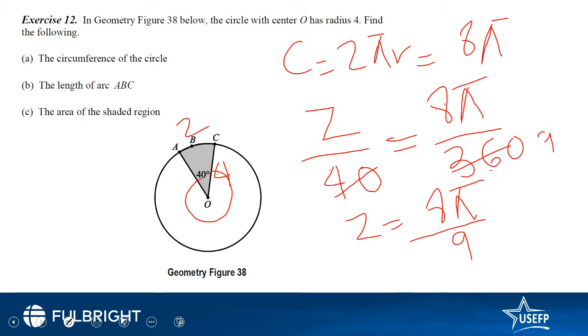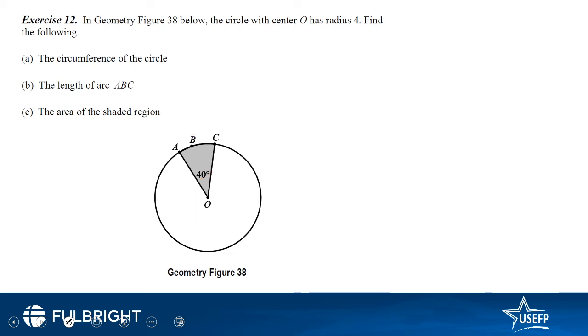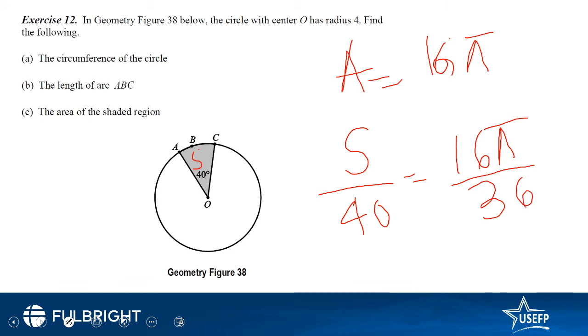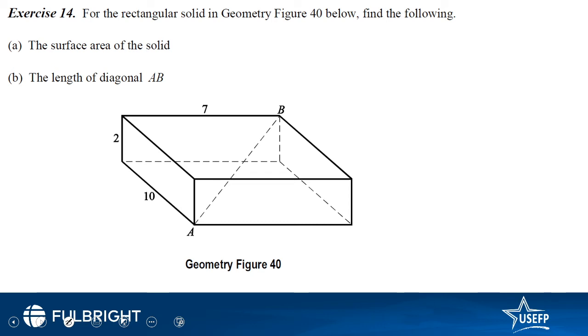Now the third part is area of the shaded region. We need to find the area. What is the area of the entire circle? Pi r squared comes out to be 16 pi. So we need to find this area, let's say it is s. So s divided by 16 pi equals 40 divided by 360 degrees. So if we take 40 on that side, it comes out to be 16 pi over 9.